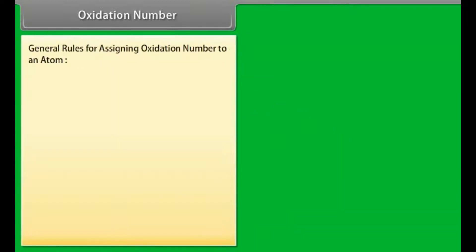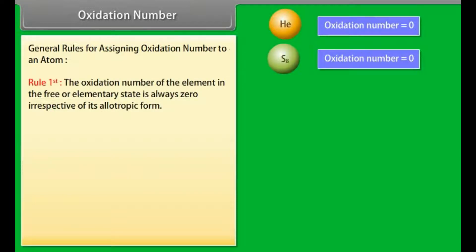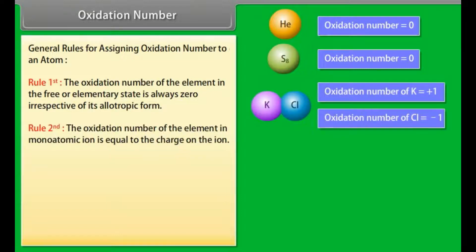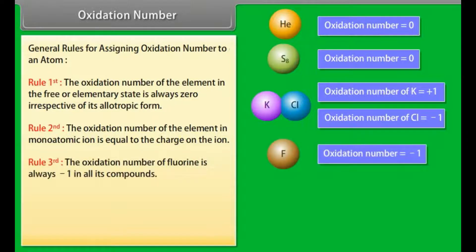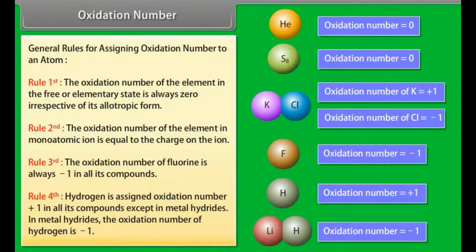General rules for assigning oxidation numbers: Rule 1 — the oxidation number of an element in its free or elementary state is always 0, irrespective of its allotropic form. Rule 2 — the oxidation number of an element in a monoatomic ion is equal to the charge on the ion. Rule 3 — the oxidation number of fluorine is always −1 in all its compounds. Rule 4 — hydrogen is assigned oxidation number +1 in all its compounds, except in metal hydrides where the oxidation number of hydrogen is −1.